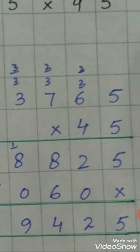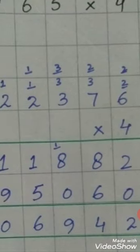4 times 6 is 24 plus 2 is 26, write 6 carry. 4 times 7 is 28 plus 2 is 30, write 0, carry 3.